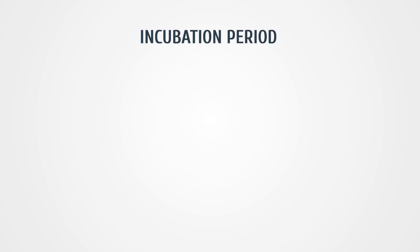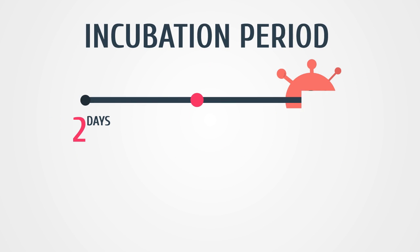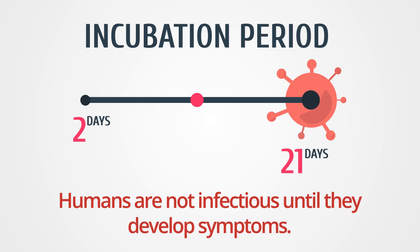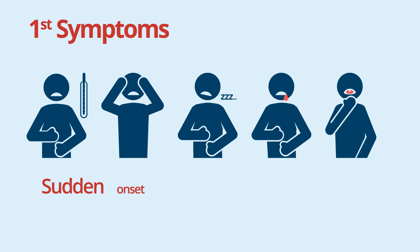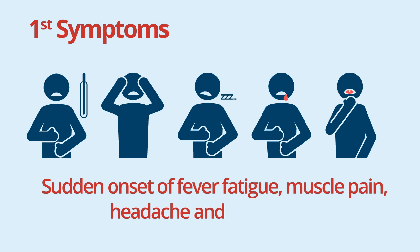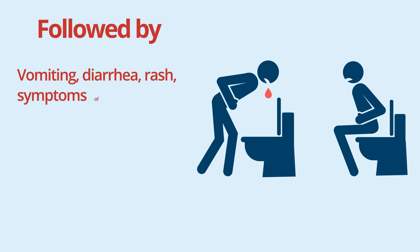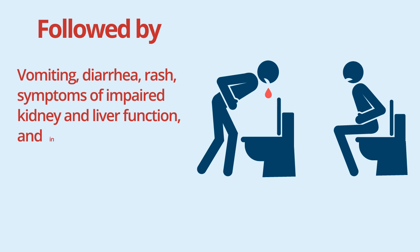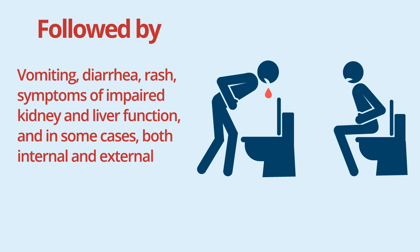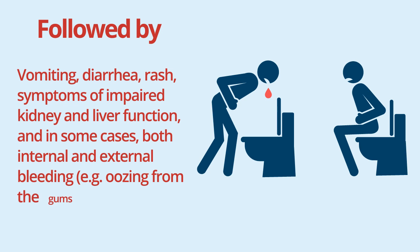The Ebola virus has an incubation period — that is, the time interval from infection with the virus to onset of symptoms — of 2 to 21 days. Humans are not infectious until they develop symptoms. First symptoms are the sudden onset of fever, fatigue, muscle pain, headache, and sore throat. This is followed by vomiting, diarrhea, rash, symptoms of impaired kidney and liver function, and in some cases both internal and external bleeding, for example oozing from the gums or blood in the stools.